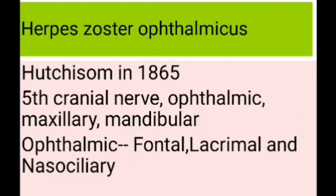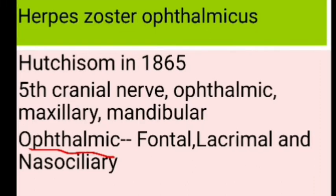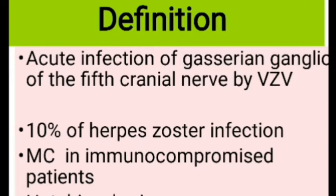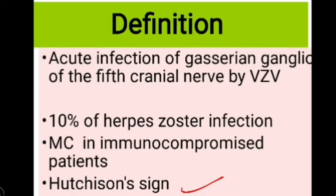Herpes zoster ophthalmicus was first described by Hutchinson in 1865. The fifth cranial nerve, the trigeminal nerve, has three branches: ophthalmic, maxillary, and mandibular. The ophthalmic branch has three sub-branches: frontal, lacrimal, and nasociliary. HZO is defined as acute infection of the Gasserian ganglion of the fifth cranial nerve by herpes zoster virus. Ten percent of herpes zoster infections have ocular manifestation. Hutchinson's sign states that ocular involvement is frequent if the side or tip of the nose presents with vesicles, due to nasociliary nerve involvement.